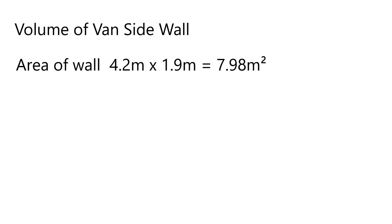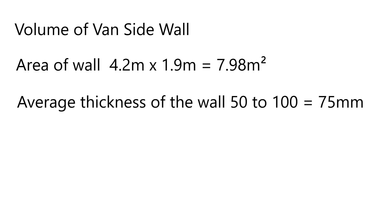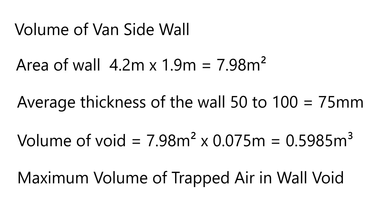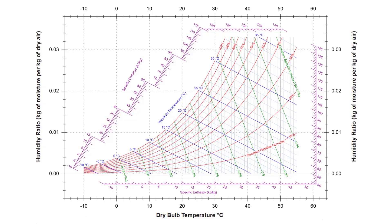The area is 4.2 meters by 1.9 meters, which equals 7.98 meters squared. The average thickness of the wall is 75 millimeters (halfway between 50mm and 100mm). To calculate the volume of that void we take 7.98 meters squared multiplied by 0.075 meters, giving us a volume of 0.5985 meters cubed — the maximum amount of air trapped in the thickness of that wall.